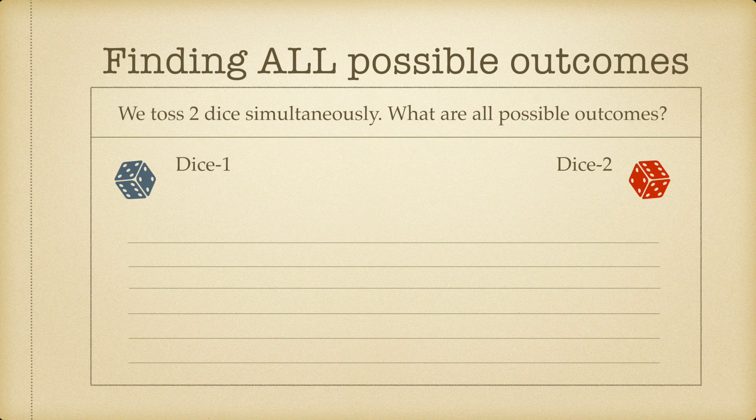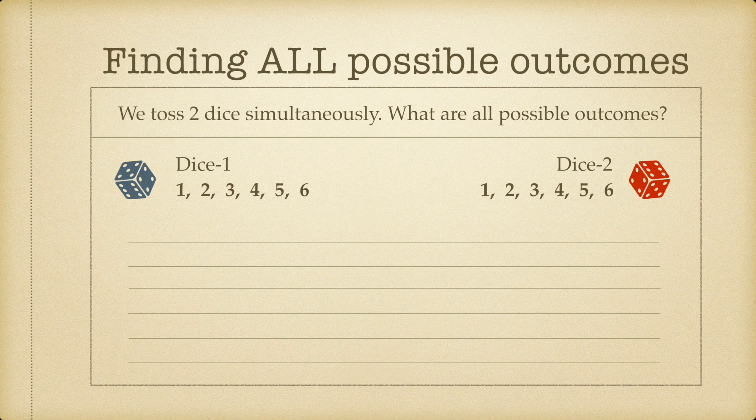Whenever we roll a die, we have a total of six possible outcomes: the numbers one, two, three, four, five, or six. This is true for dice one as well as for dice two. The question now is, how do we combine them?